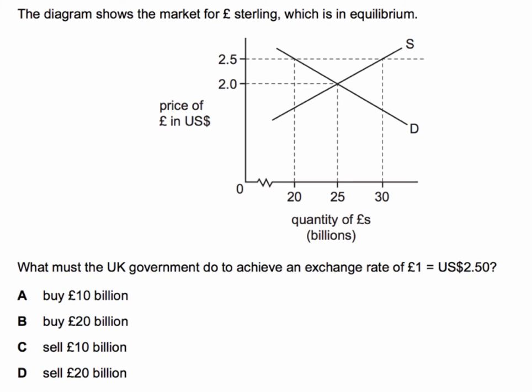Have a go — press the pause button. When you come back, the correct answer to this question is A: the government, or the central bank operating on the government's behalf, must go into the market and buy 10 billion pounds of sterling.